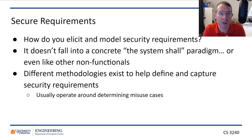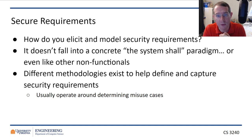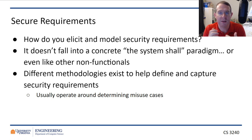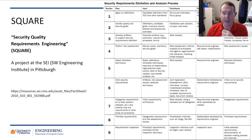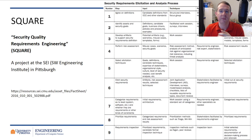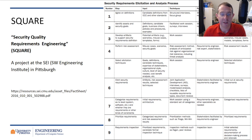The other thing we want to do is focus on what are the pieces of data in your system that we need to protect — what is the critical information? There's a method called SQUARE, which came out of the Software Engineering Institute at Carnegie Mellon. It's a step-by-step process for thinking about what you should do during requirements.